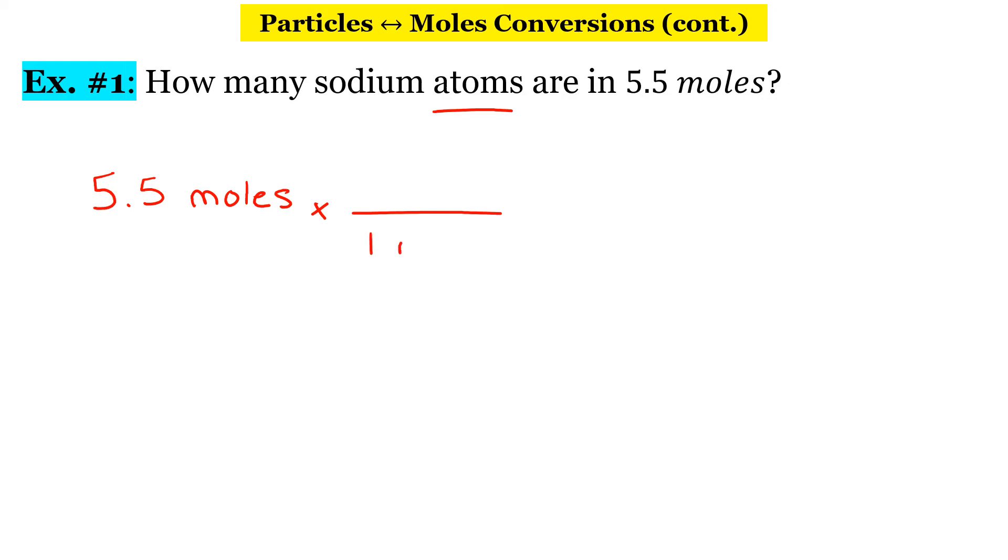So in one mole, we have 6.02 times 10 to the 23rd atoms. So our units are going to cancel. Our moles are going to cancel. So we're just left with atoms, which is the units that we want. So 5.5 times 6.02 times 10 to the 23rd will get us an answer of 3.311 times 10 to the 24th.